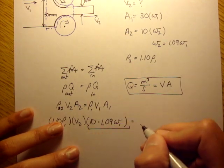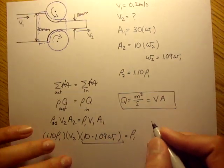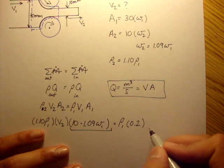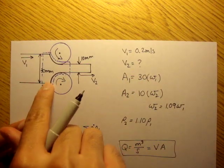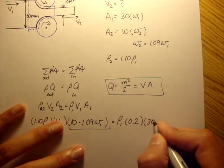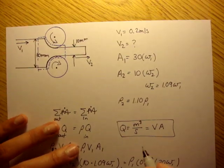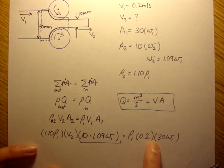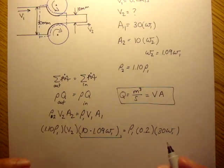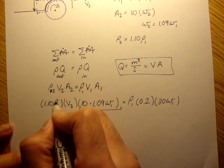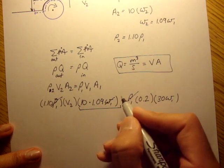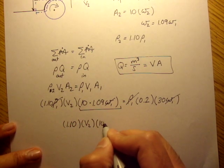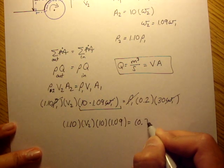Is equal to rho 1 times v1, which we said was 0.2 meters per second. That's rho VA. So the area 1 is 30 times width 1. And the reason I'm not changing 30 millimeters into 0.03 meters is because that conversion is going to cancel out here anyway. If we divided everything by 1,000, it would be the same as not dividing everything by 1,000. But here we see that rho 1 cancels, width 1 cancels. And we're left with 1.10 times velocity 2 times 10 times 1.09 is equal to 0.2 times 30.